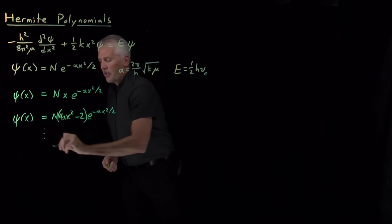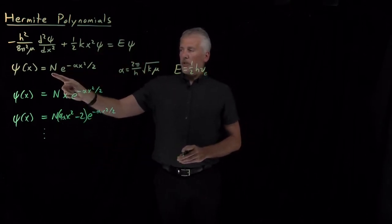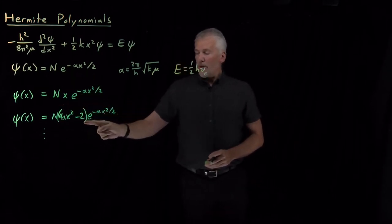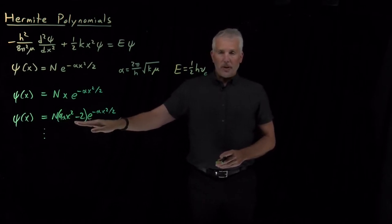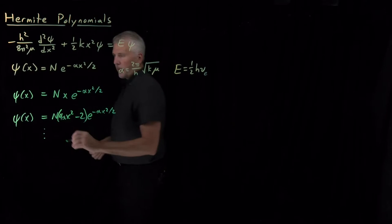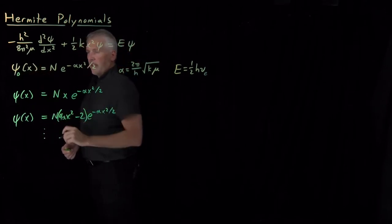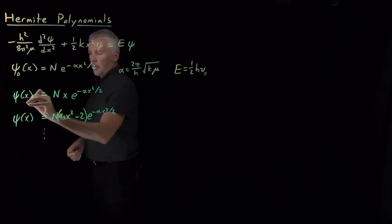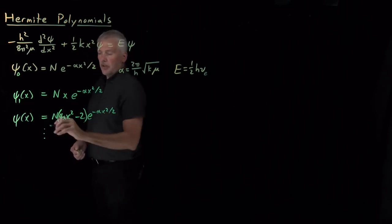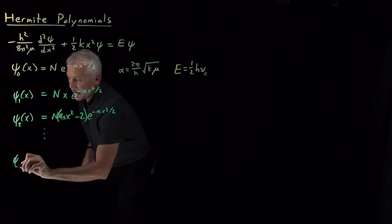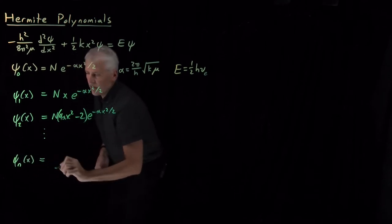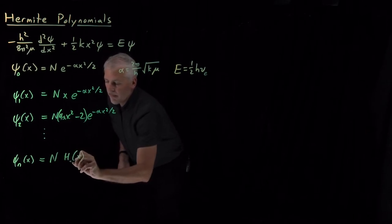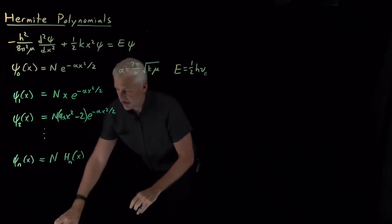As you can see, there's a whole series of solutions: one with just a constant multiplying the Gaussian, one with a linear term in x, one with a quadratic function of x, and then cubic and quartic and so on. We can number these solutions. The zeroth solution has a zeroth-order polynomial in front of the Gaussian. The linear or first-order polynomial is the n equals 1 solution, then n equals 2, and in general for any n, we can write a solution as a normalization constant times a polynomial multiplying the Gaussian.